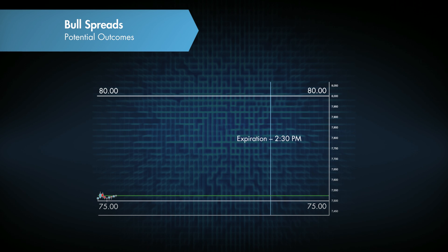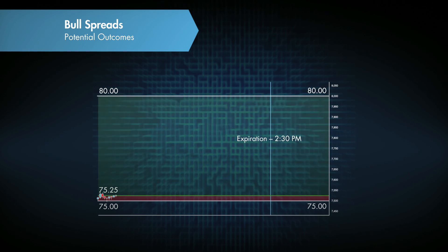If we were to order at 75.25 — going long or buying at 75.25 — our risk was 25 points with a potential reward of 475. So the total contract value is $500. This is a variable payout type of contract.